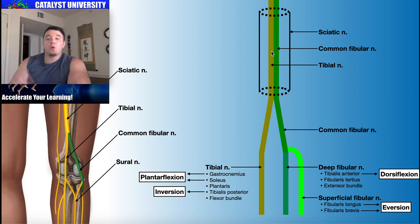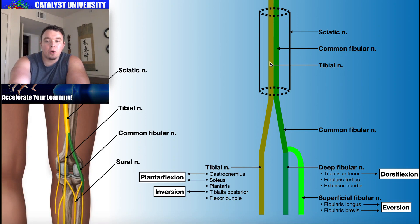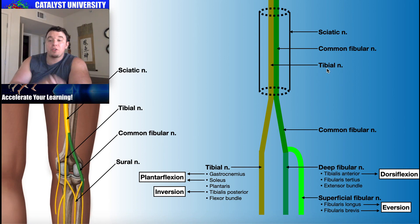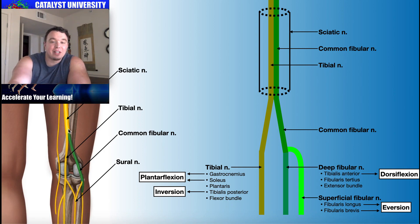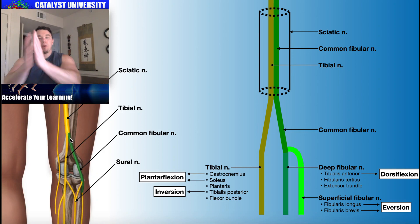The sciatic nerve is really composed of two nerves that are fused together: the common fibular nerve, also called the common peroneal nerve — shown here in green — and the tibial nerve, shown in gold. So the sciatic nerve is really a composite of those two nerves fused together. As it descends down the back side of the leg, it reaches the superior part of the popliteal fossa, and that's where it divides — both nerve components separate from one another.